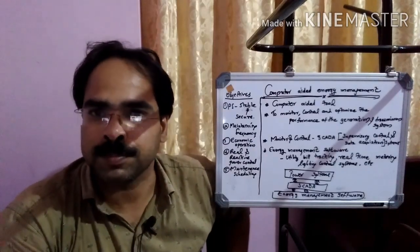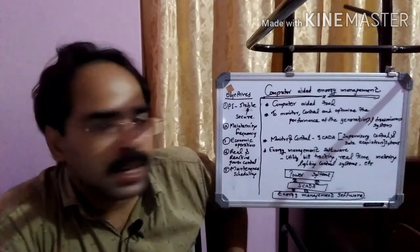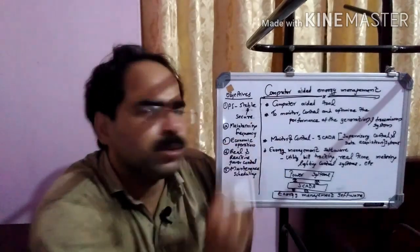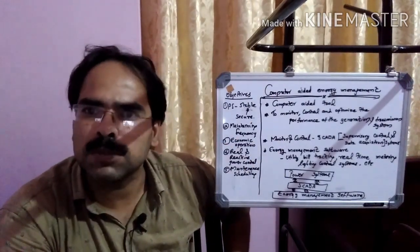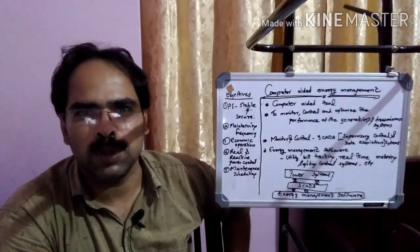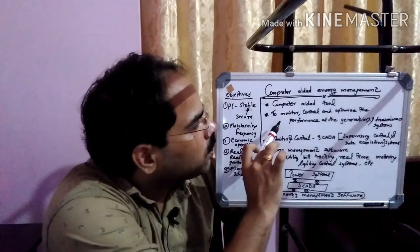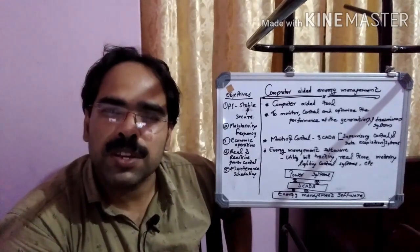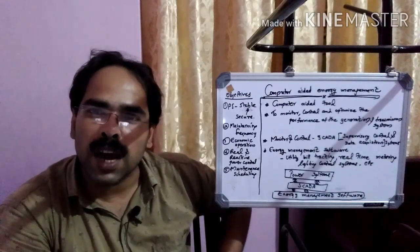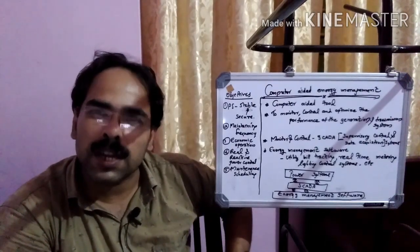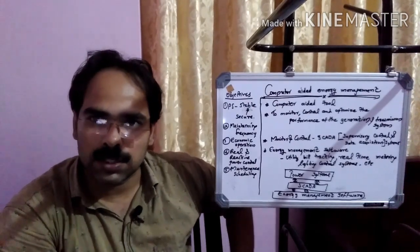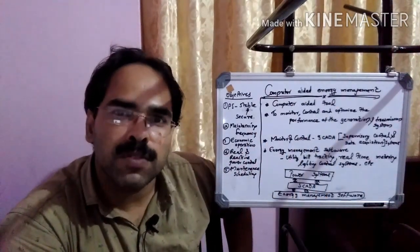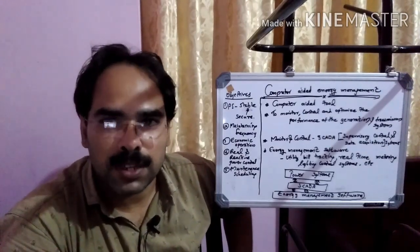We can go through the computer-aided energy management systems. What do you mean by computer-aided energy management system? Actually, it is a computer-aided tool. In order to manage the energy systems, commonly we are using a computer-aided tool. In order to monitor, control, and optimize the performance of the generation and transmission system, we require computer systems. With the support of computers and related areas, we can manage the energy systems — that type of systems we can call it as computer-aided energy management.